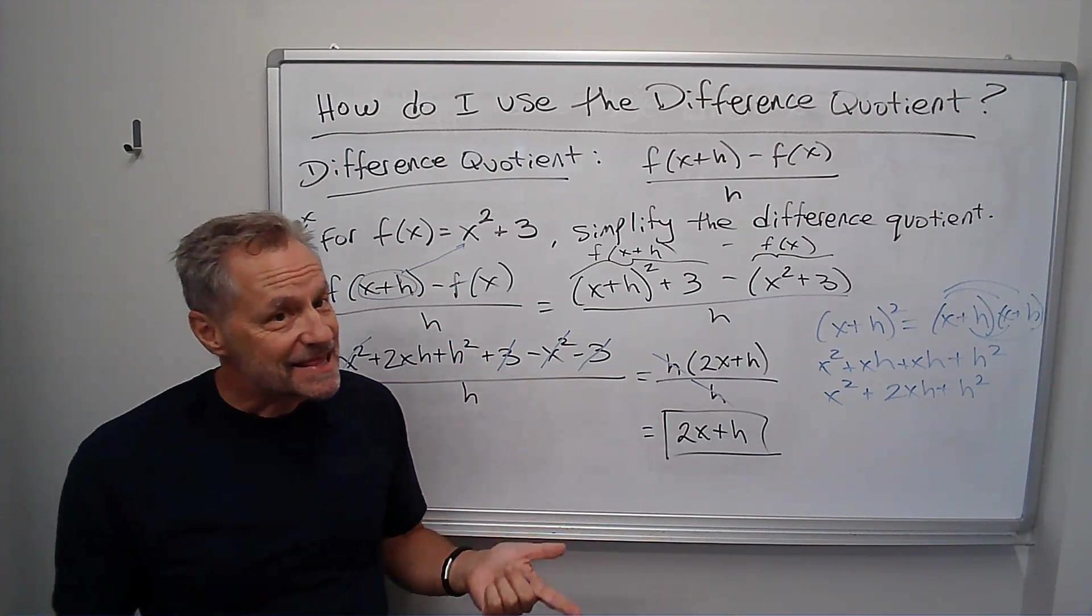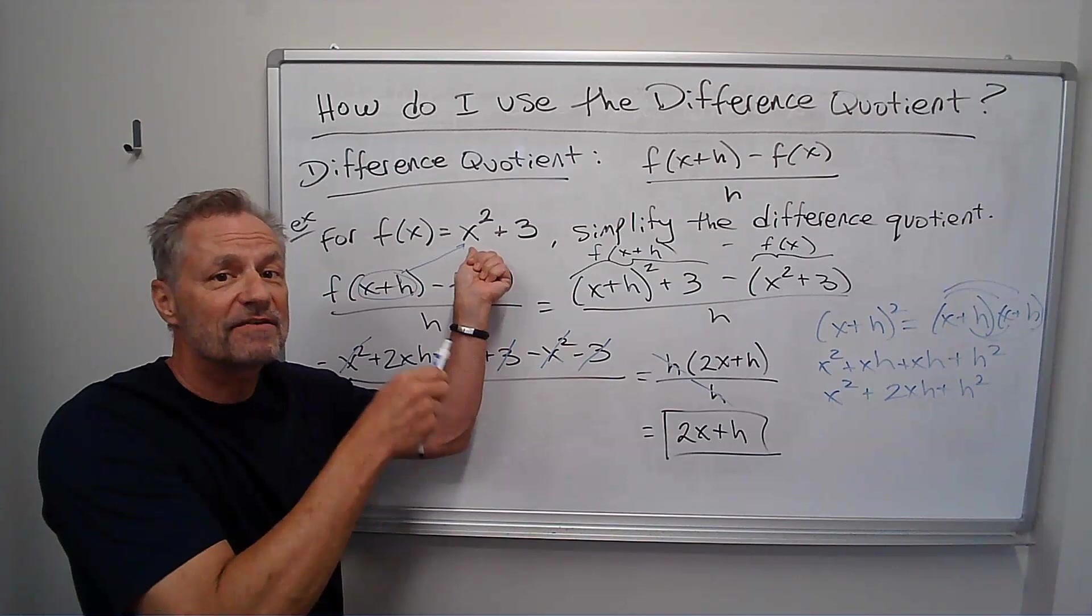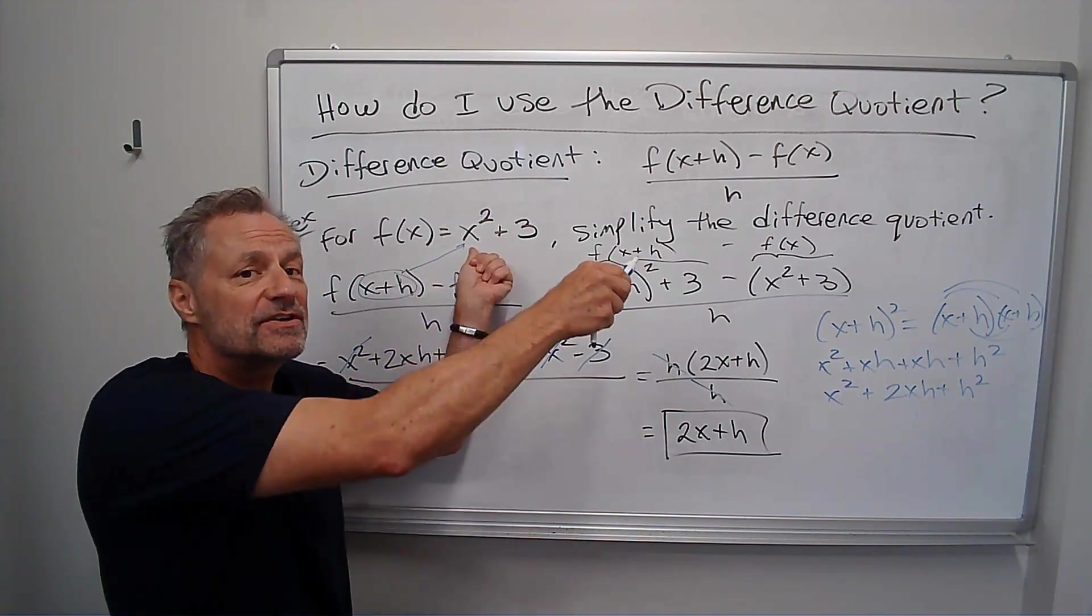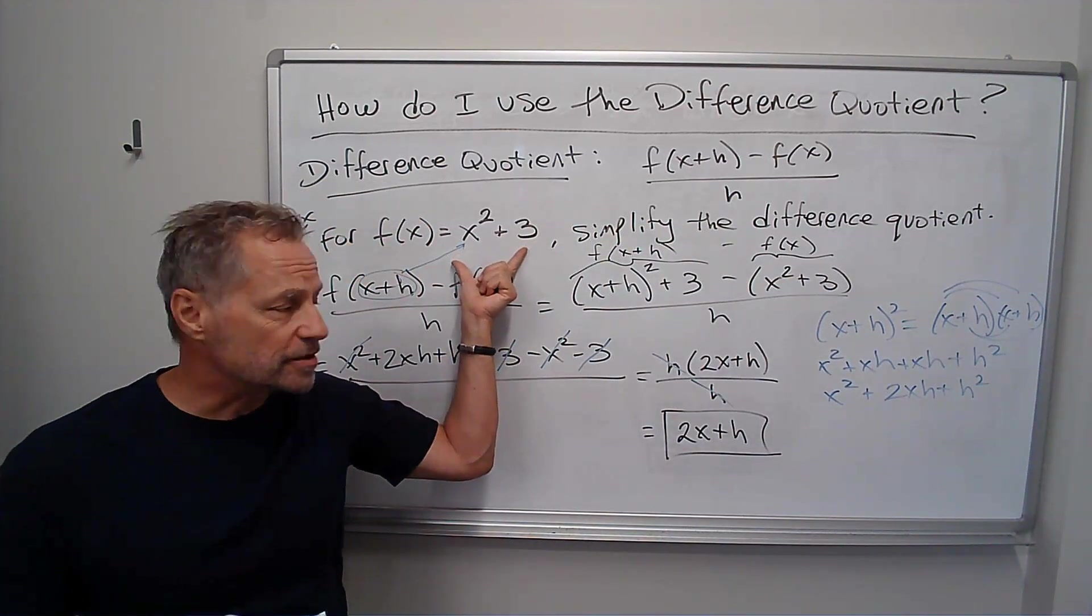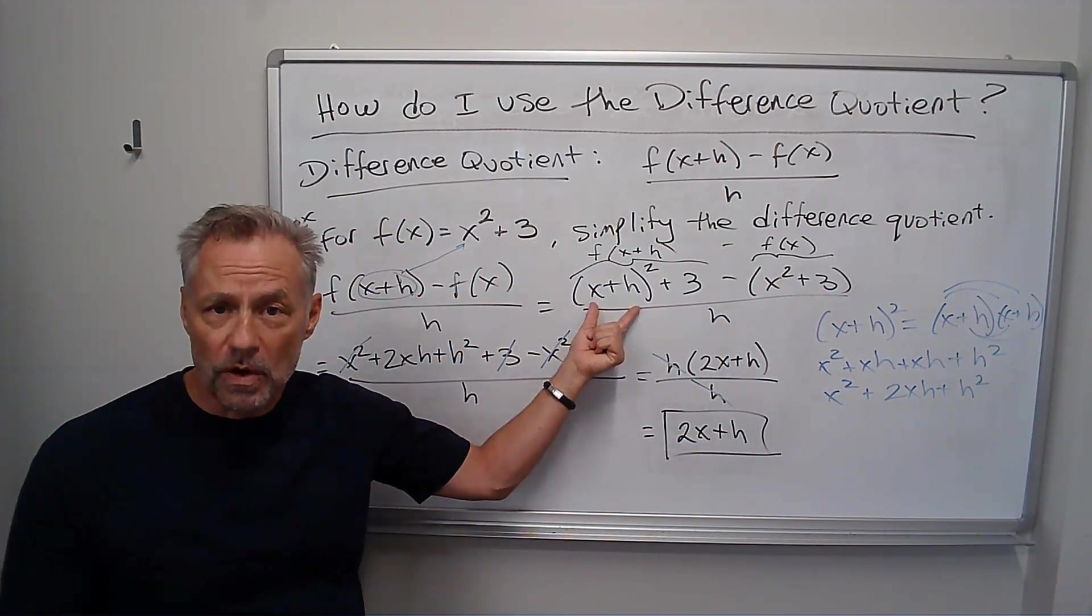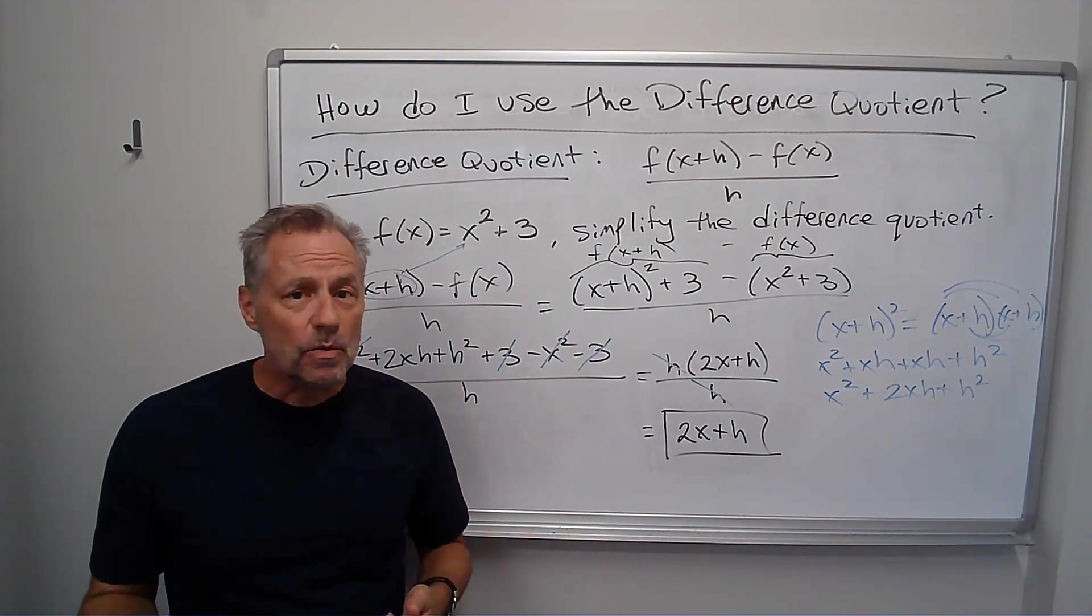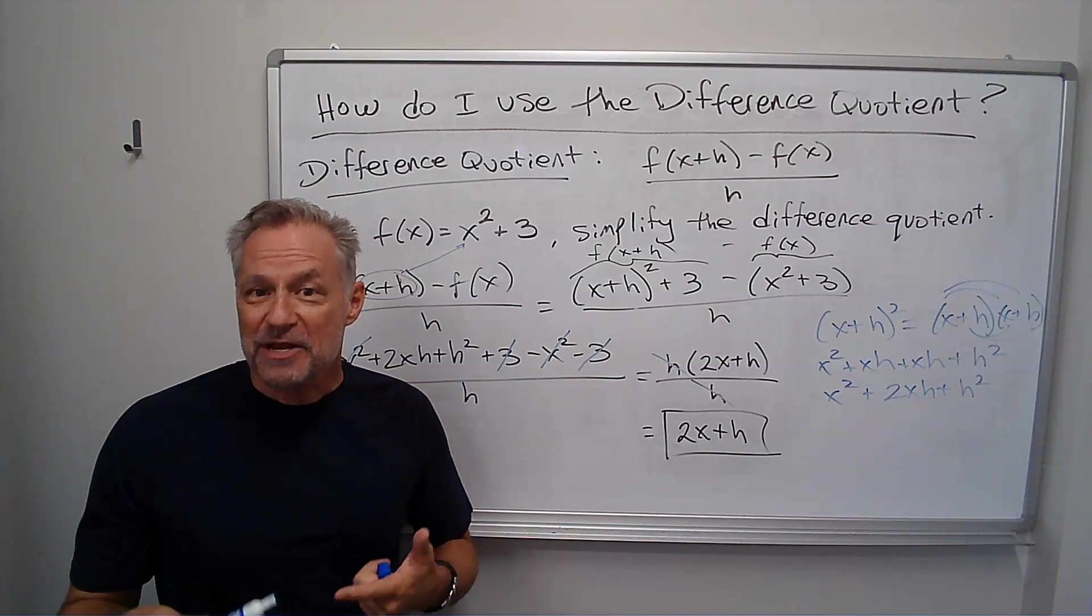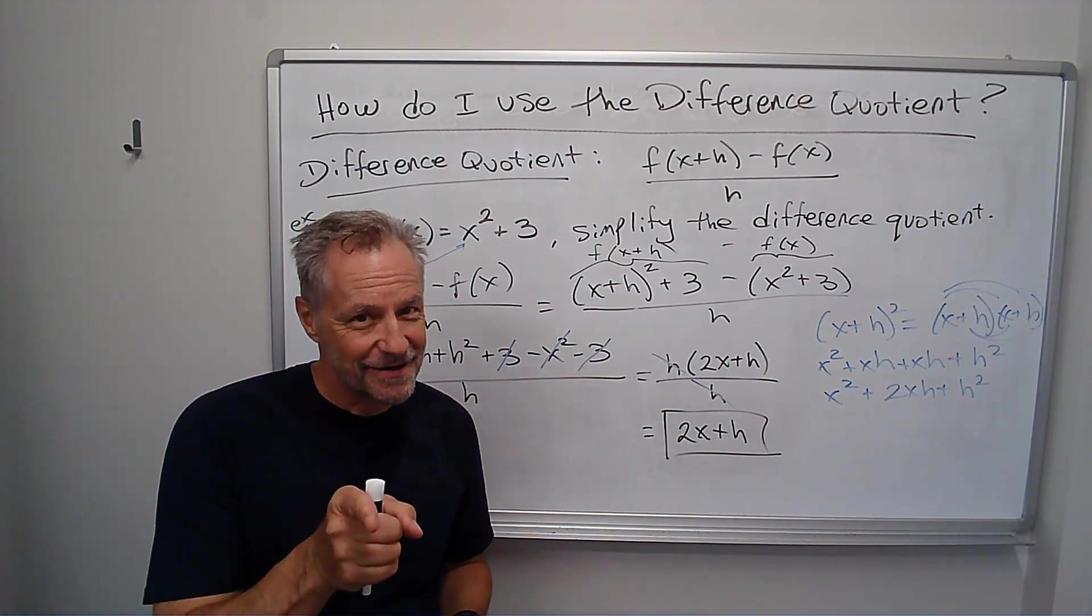Again, the key things to watch out for: make sure you plug x plus h in wherever you have an x. If you have more than one x, you have to plug x plus h in for each of those. Distribute your negative to the whole entire original function. And then make sure you FOIL it out if you have an x plus h squared. All right, stick with those, practice it. You'll get it pretty quickly. It just takes a little practice. But remember, you can do it.